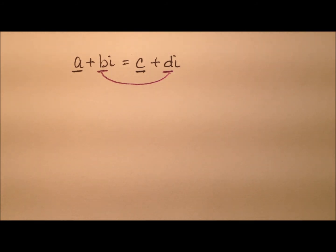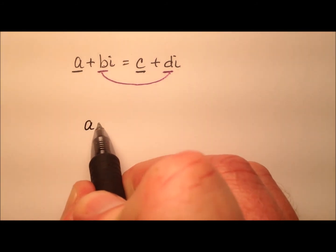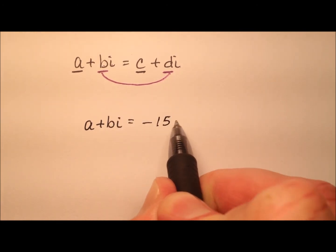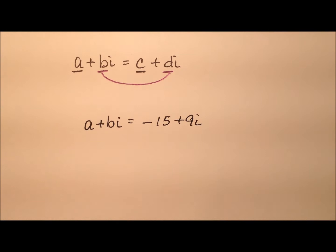Okay, so we can apply the equality property of complex numbers to set up and solve equations that say that two complex numbers are equal. So we're going to look at two quick examples. The first one is going to be a plus bi equals negative 15 plus 9i.